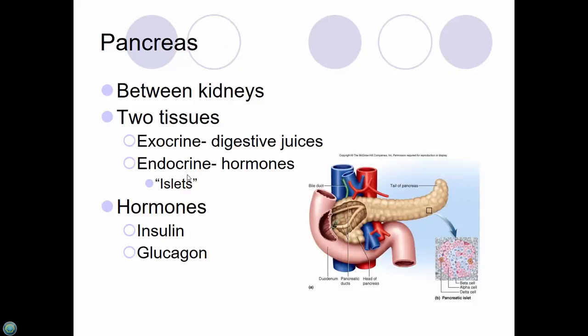The pancreas is both an exocrine and an endocrine organ. Exocrine — the digestive enzymes. The two major hormones are insulin and glucagon. Insulin is released when your blood sugar is high. Normal blood sugar should be somewhere between 70 and 100 milligrams per deciliter.